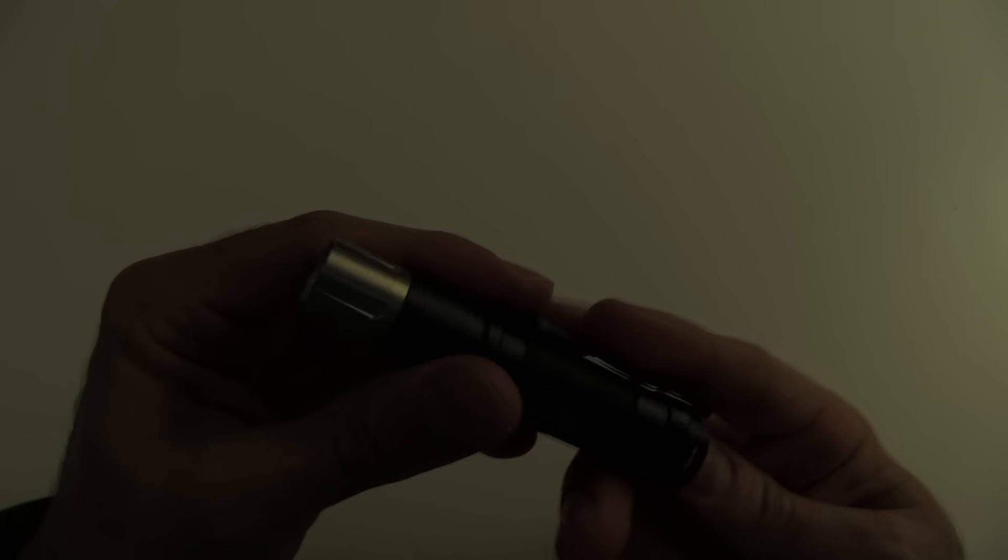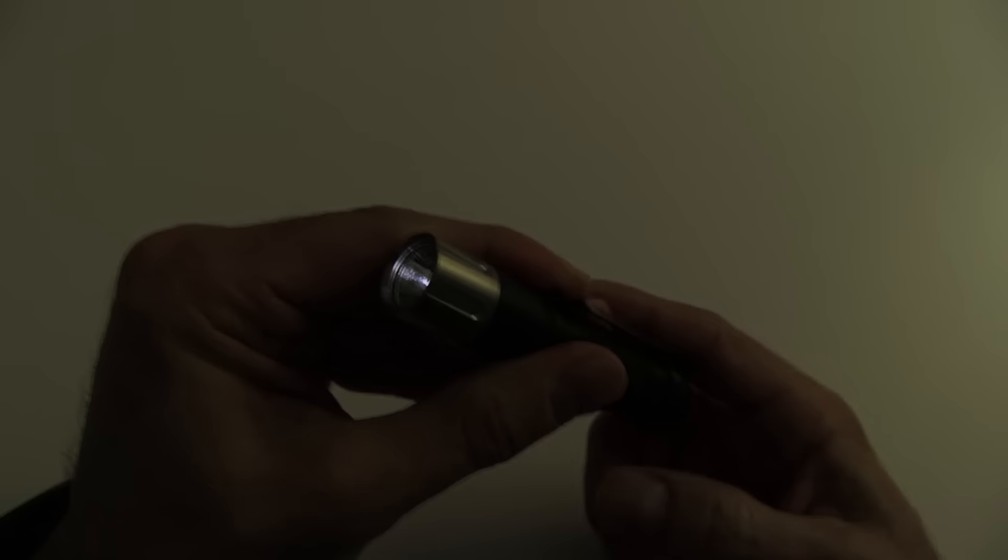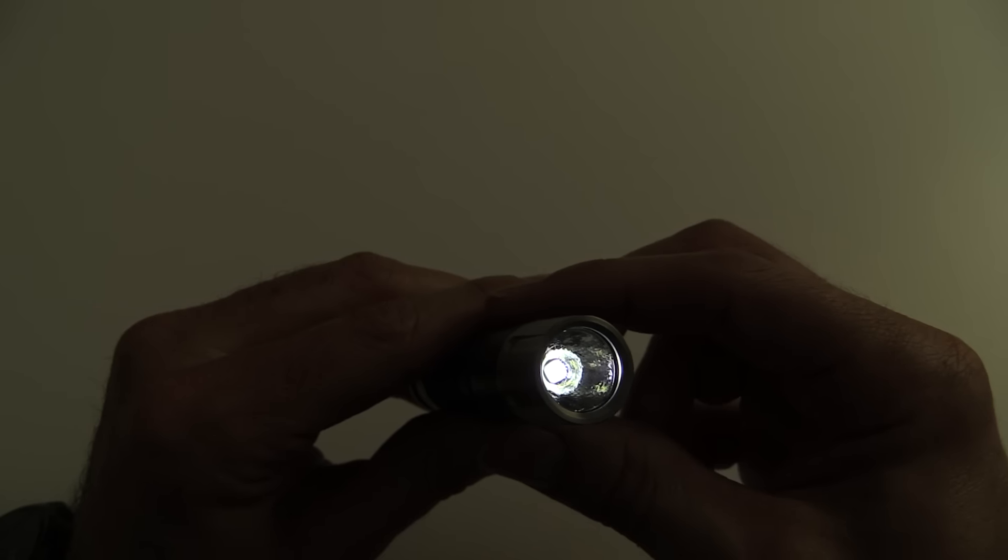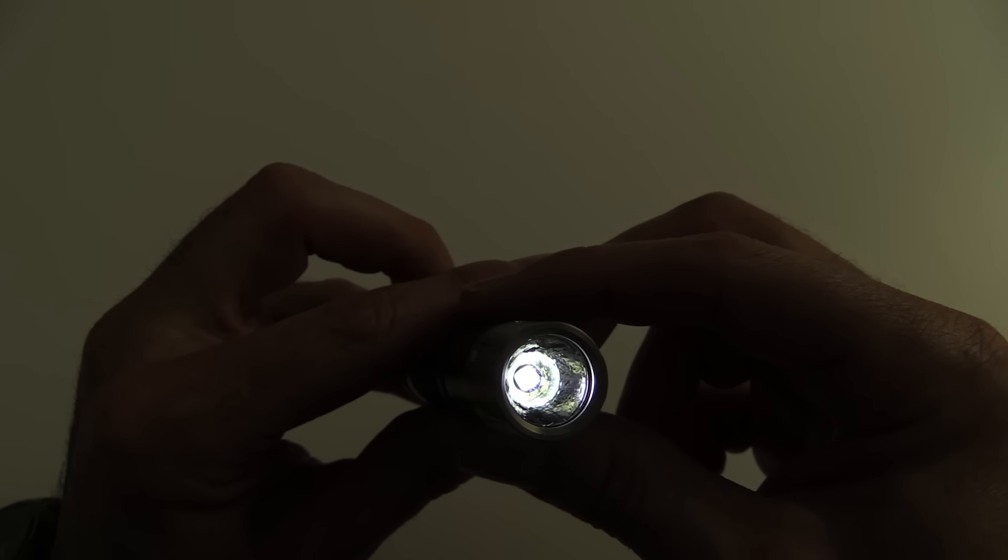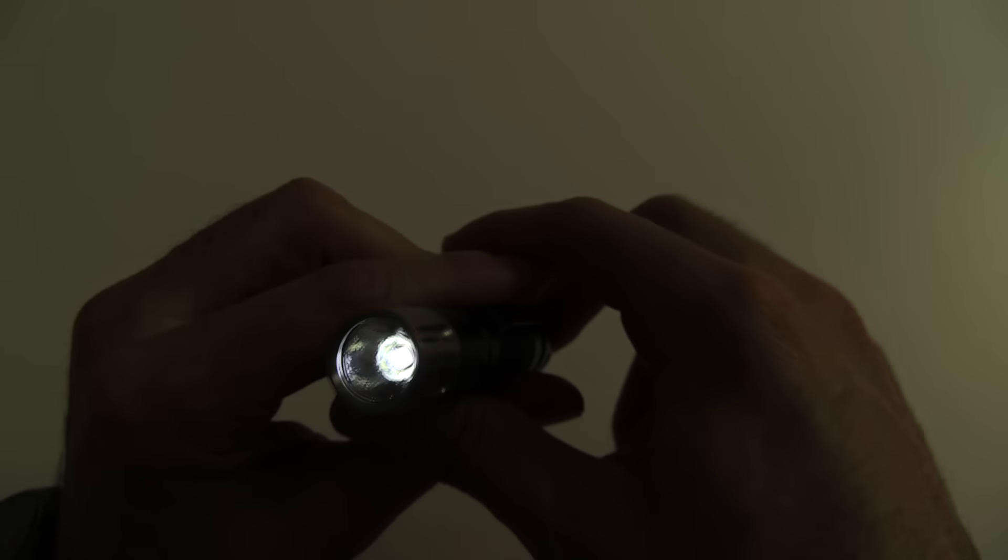Function of this light, it is a reverse click only. So you push it in, you let it go, and the light comes on. Has the three modes, like I said. It has the moonlight, 0.2 lumens. It will do that for 240 hours.